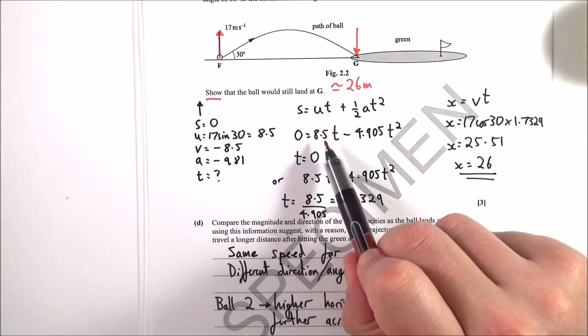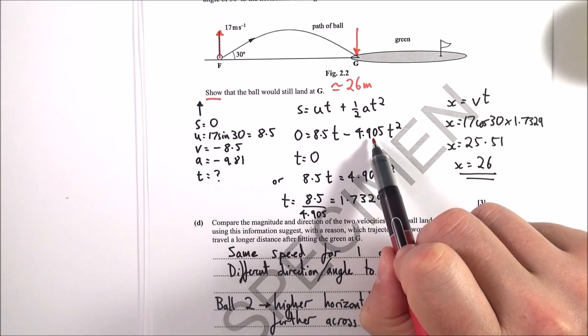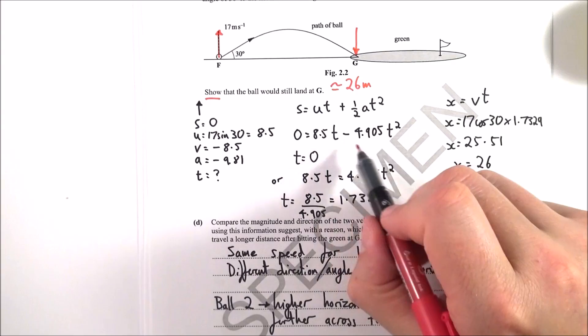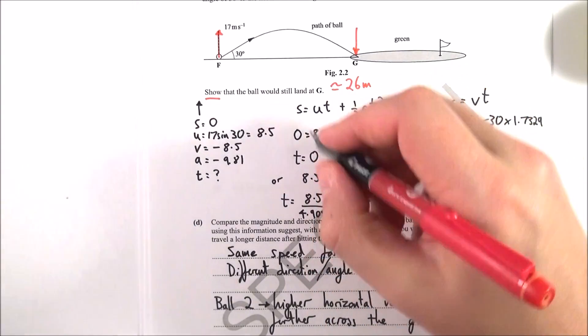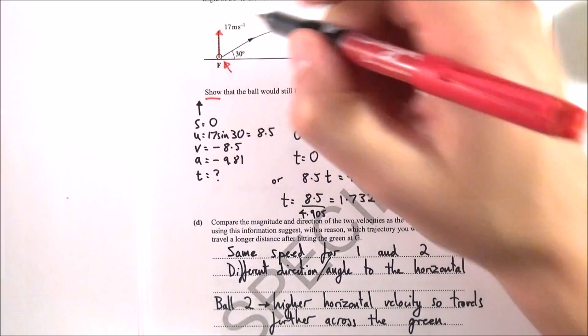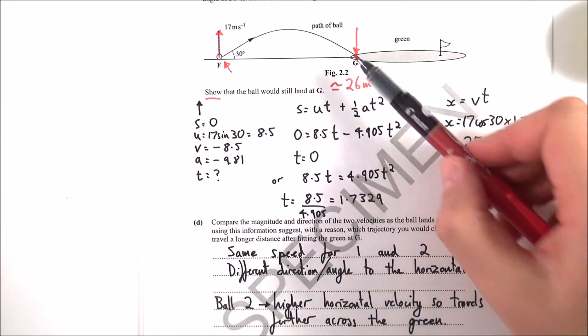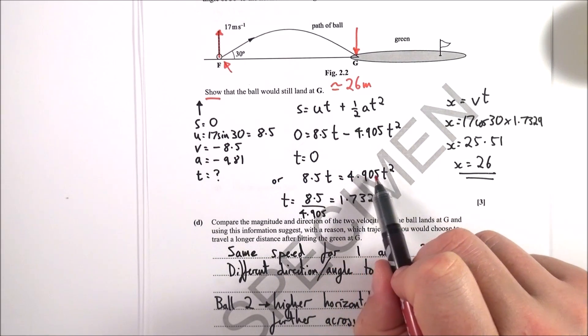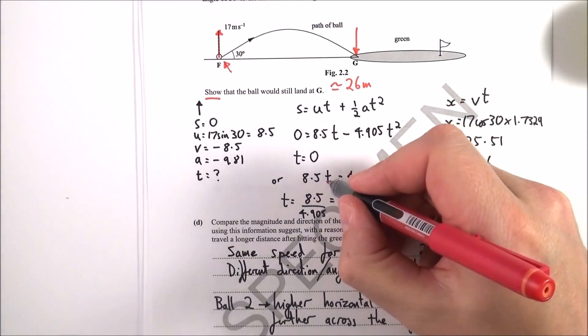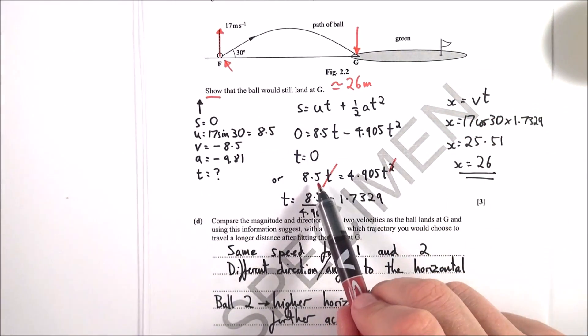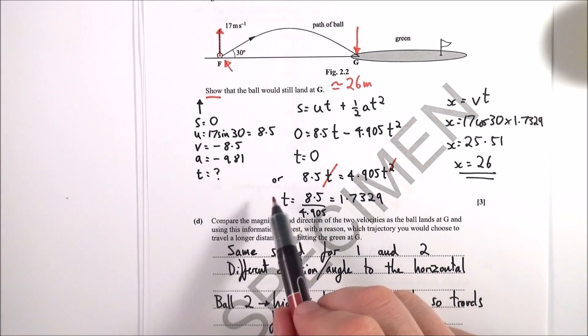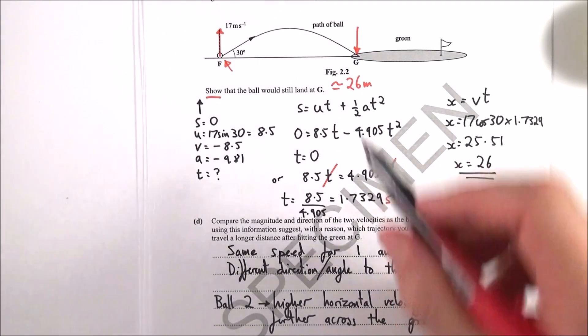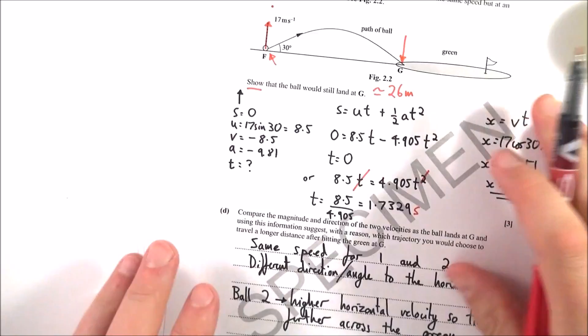I put in the numbers that 0 equals 8.5T minus 4.905T squared, and this basically gave us two results. First of all, that's zero when T is equal to zero, but obviously that's very much the time at the start, but we want to know the time to go from here to here. The other time is, you can rearrange this to say that 8.5T is equal to 4.905T squared. We can then cancel one of the T's, and therefore 8.5 is equal to 4.905T. I can then work this out for T to find that T is equal to 1.7329 seconds.